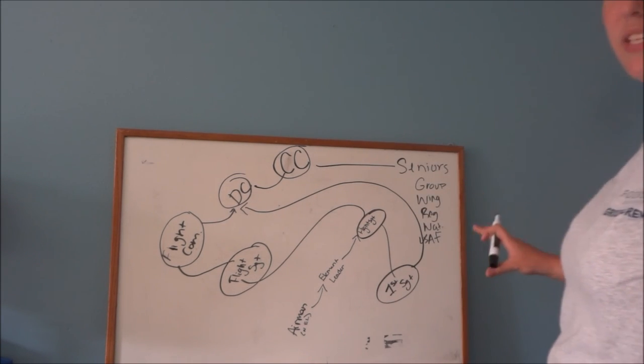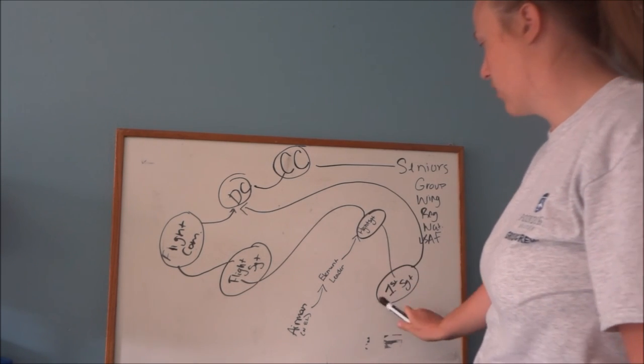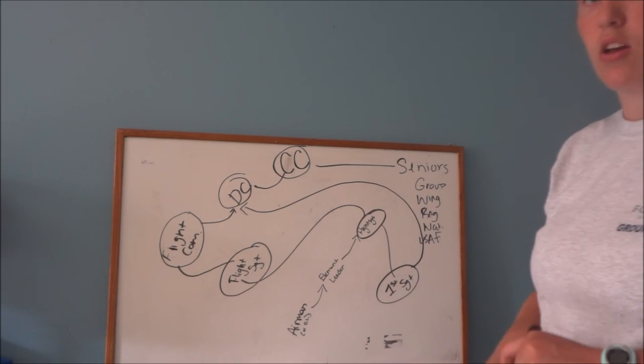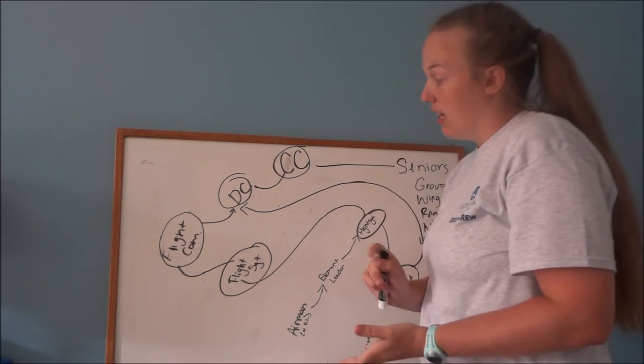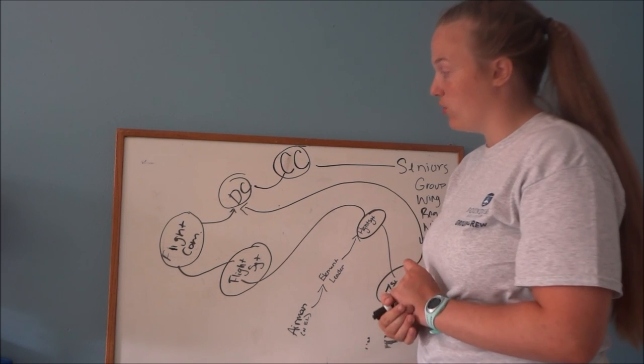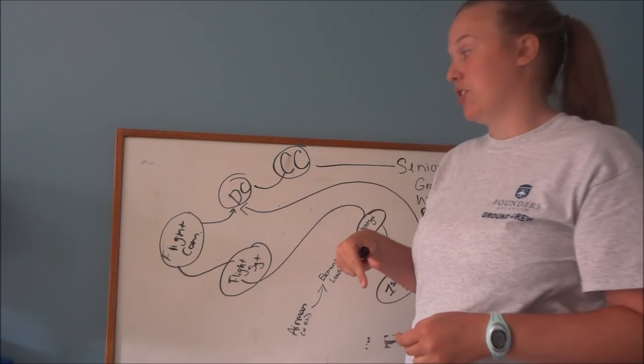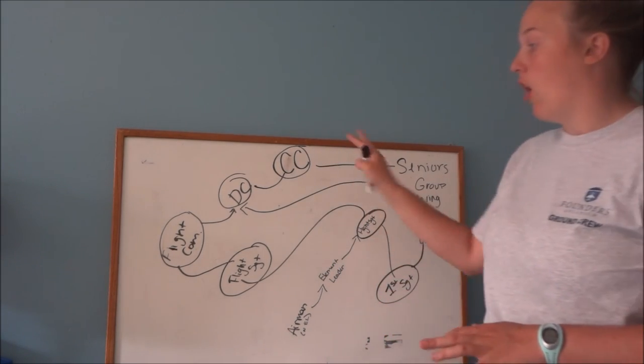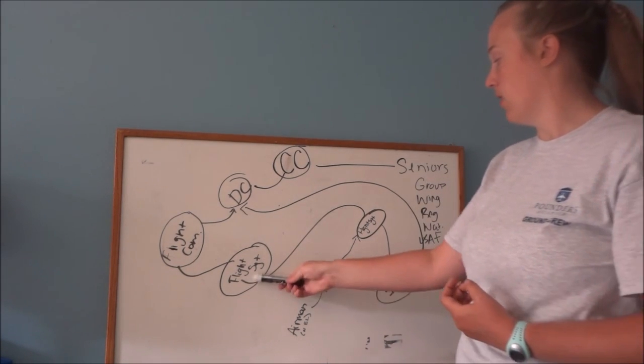I hope this makes sense to you. I know it's a little bit confusing once you get to the first sergeant, as the chain of command kind of branches out more. But once you actually start using it, it gets pretty simple. If you have any questions on this whatsoever about how this works, I also leave links below to the roles and responsibilities of flight sergeant, first sergeant, and flight commander.